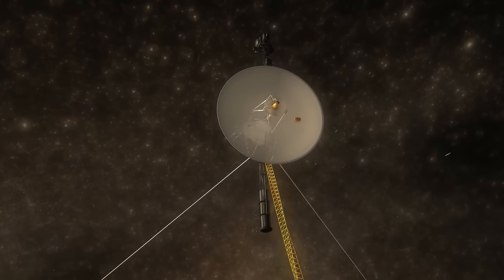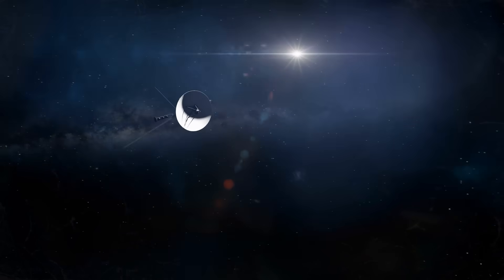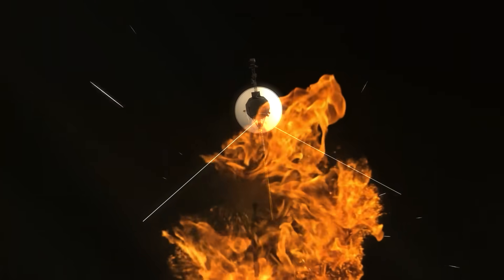There's something new from the Voyager probes. NASA has now announced that the space veterans flew through a mysterious wall of fire during their journey into interstellar space and were confronted with temperatures of up to 50,000 degrees Celsius.